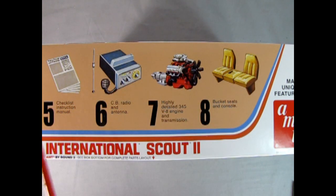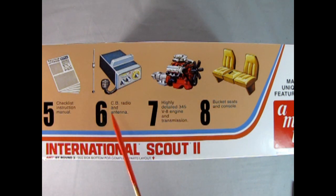Woo-wee. Number five, we have a checklist instruction manual. Number six, a CB radio and antenna. And number seven, a highly detailed 345 V8 engine and transmission. Can't forget the transmission. You won't go anywhere without one. And then, finally, number eight, bucket seats and a console.